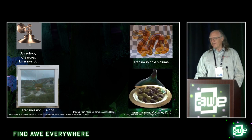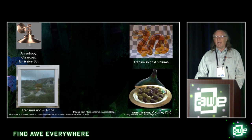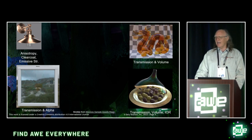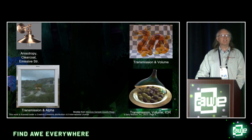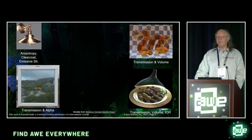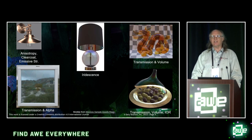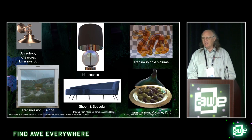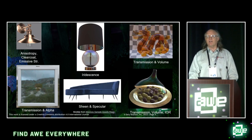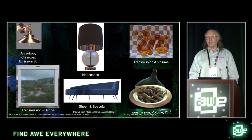Transmission, volume, and index of refraction (IOR) can be seen in the glass dish with olives — especially apparent in the animation as the cover goes up and down, showing displacements of the olives. Iridescence is shown on the inside of a table lamp, and sheen and specular are shown in the velvet cushioning of what's called the Glamour Couch.